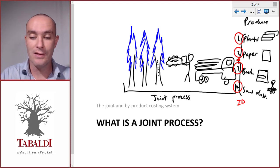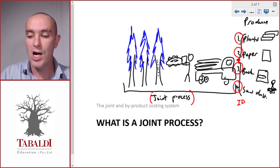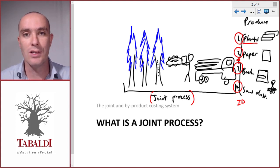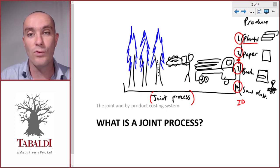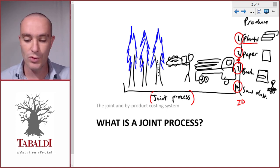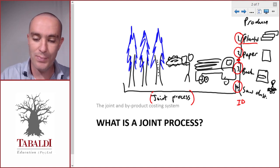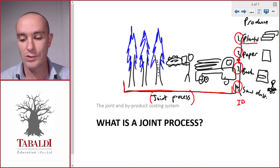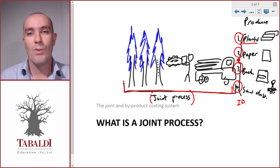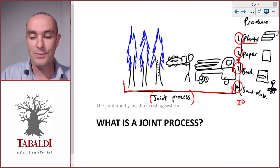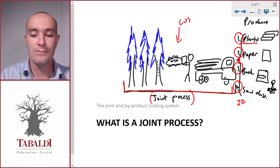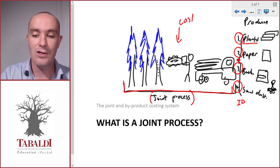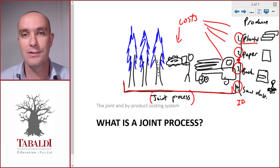We also can't manipulate this process to yield only good planks with no bark or sawdust, or to yield only wood for paper. The joint process has to be carried out before we know how much of each product will result. The problem is: we need to cost all four products, and a large part of the cost comes from this joint process. How do we allocate these costs to the different products? That is what joint and by-product costing is about.